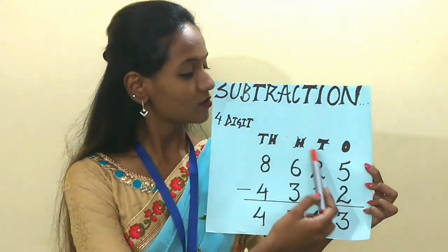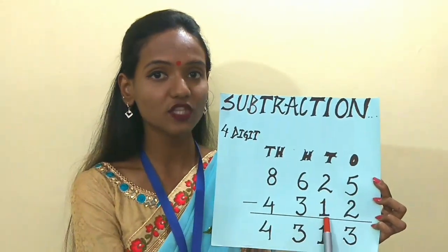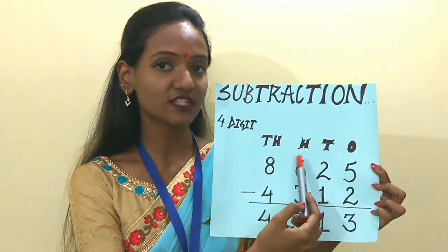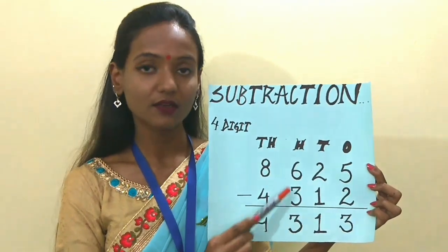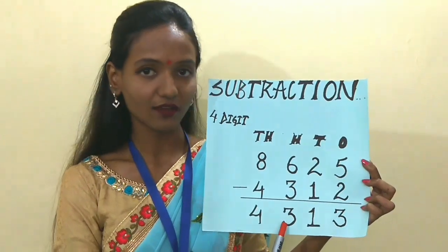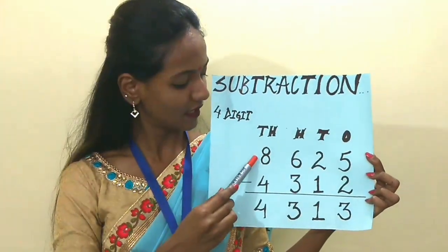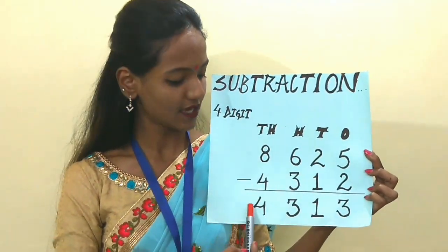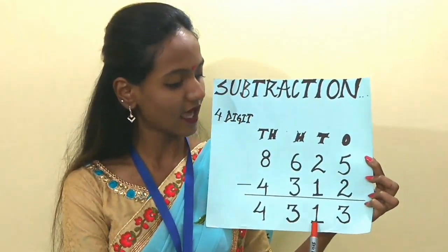Moving on to the 10s place: 2 minus 1. What is 2 minus 1 children? Yes, 1. Now the 100s place — what are the digits in the 100s place? 6 and 3. Subtract 6 and 3: we get 3. Very good. And in the 1000s place we have 8 and 4. Let's subtract 8 and 4, we get 4. So what is the answer children? 4,313.